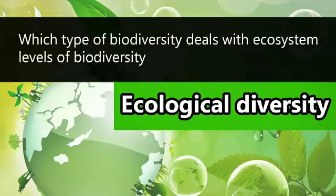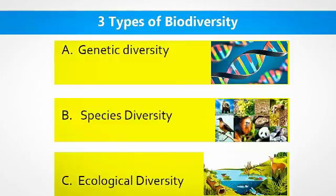Next question: Which type of biodiversity deals with ecosystem? The answer is ecological diversity. Ecological diversity deals with ecosystem levels of biodiversity. There are three types of biodiversity: species and ecological. Examples of ecological diversity are deserts, grasslands, and wetlands.